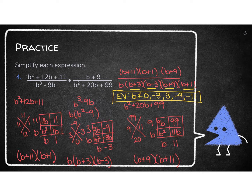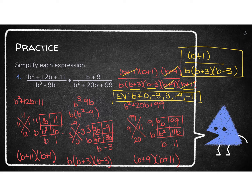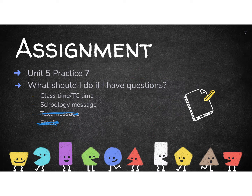Now I simplify: B plus 11 on top cancels with B plus 11 on bottom; B plus 9 on top cancels with B plus 9 on bottom. Remember, B plus 1 is in parentheses — I cannot take just the B out of that. So on top I'm left with B plus 1, and on the bottom I have B times (B plus 3)(B minus 3). That's your final answer along with the EVs. This isn't the easiest, but it's just piecing together everything you've learned. If you have questions, connect with me — and if you need scratch paper, feel free to come up or use a piece from a notebook. Good luck.